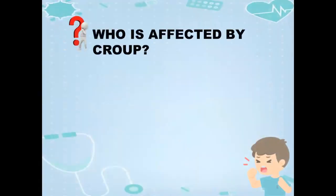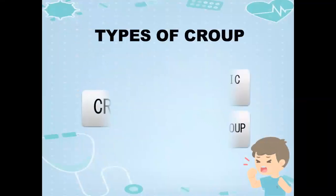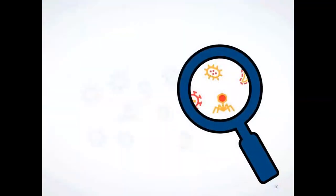Who is affected by CRU? It has an annual prevalence of about 3%, occurs predominantly between 6 months and 3 years of age, primarily during the cold weather months. Males have 1.5 times the prevalence over females. There are two types of CRU: spasmodic CRU and viral CRU.